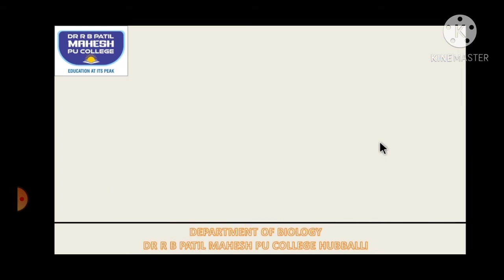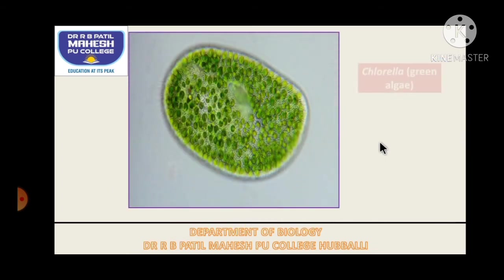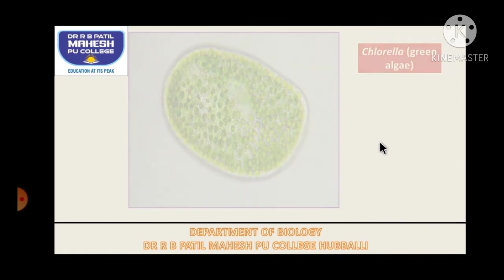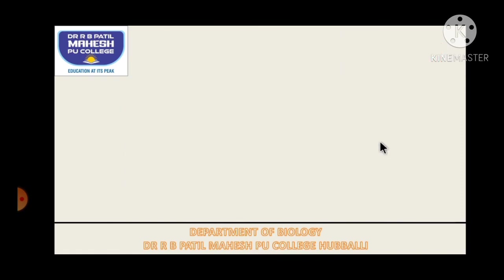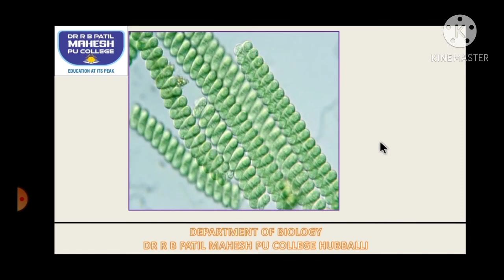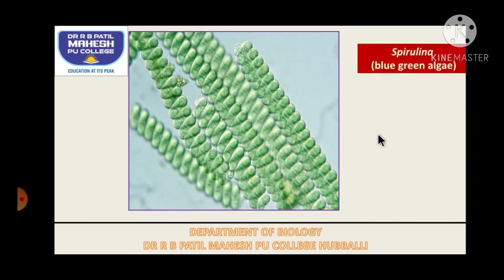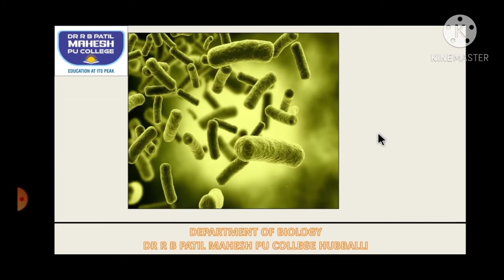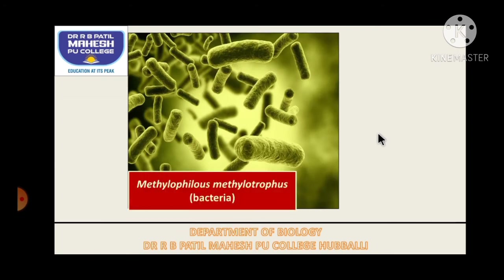We are going to add these things to our daily diet. A few examples: Chlorella is one of the green algae which is said to be a rich source of vitamin B complex. Then we have another alga called Spirulina, a cyanobacteria — a blue-green alga — which is said to be rich with protein. We also make use of bacteria by the name Methylophilus methylotrophus.